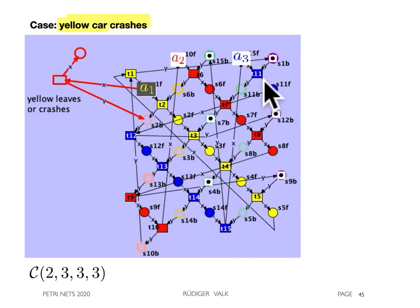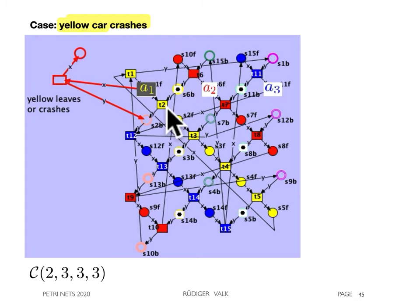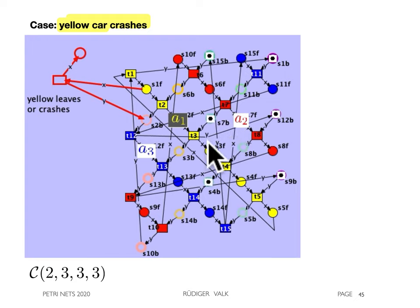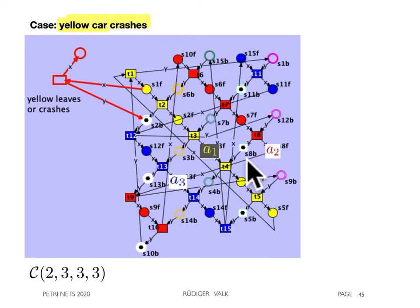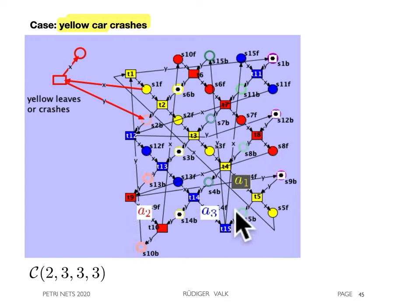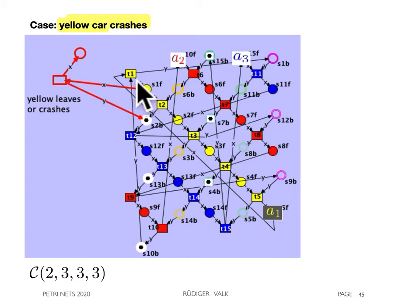In the renew execution of an equivalent colored net, the following steps are possible. The other two processes continue unblocked. This is repeated until the crash of the yellow car will happen. Here we have the crash of the yellow car, but the other two processes continue unblocked.